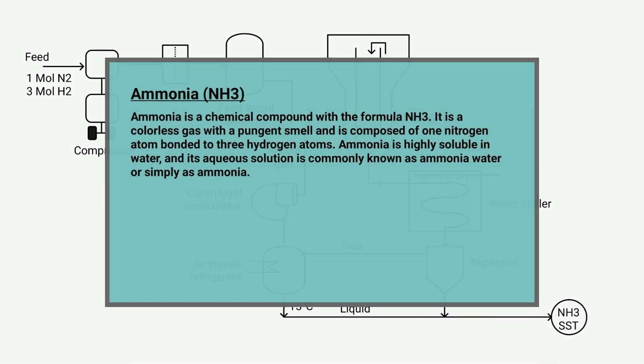First of all, we will know what is ammonia. Ammonia is a chemical compound with the formula NH3. It is a colorless gas with a pungent smell and is composed of one nitrogen atom bonded to three hydrogen atoms. Ammonia is highly soluble in water and its aqueous solution is commonly known as ammonia water or simply as ammonia.